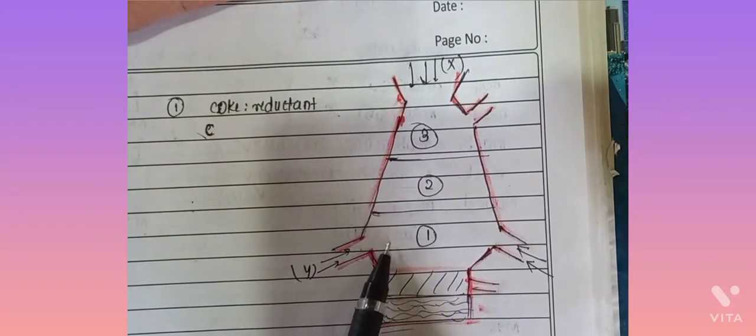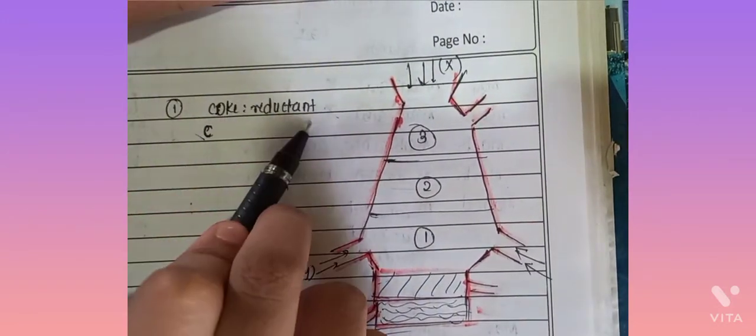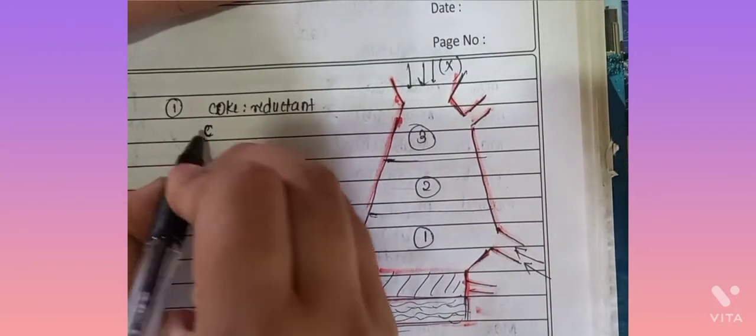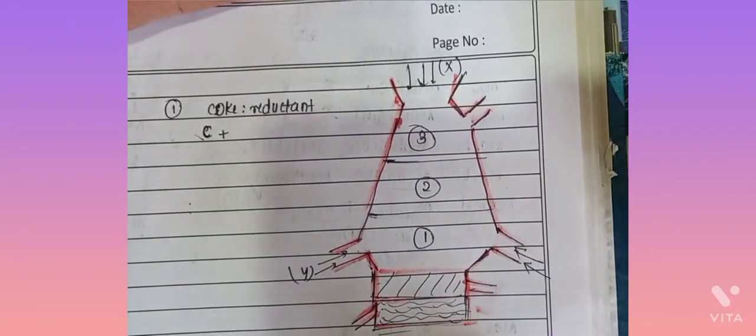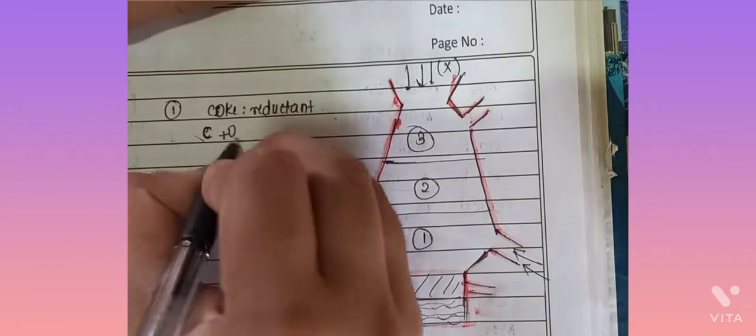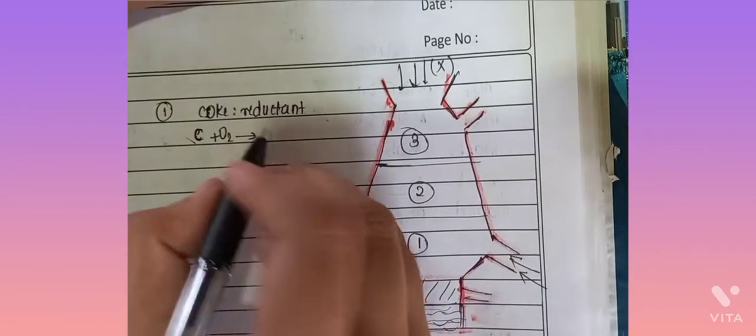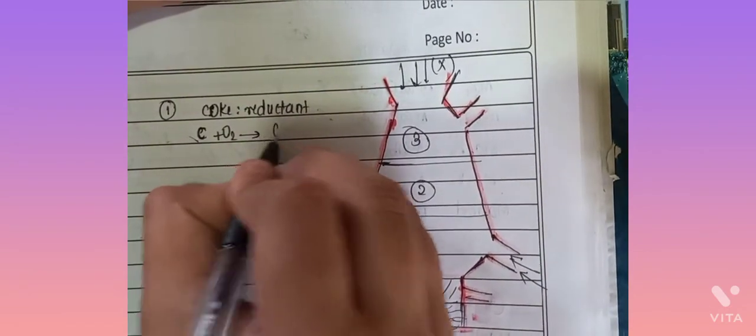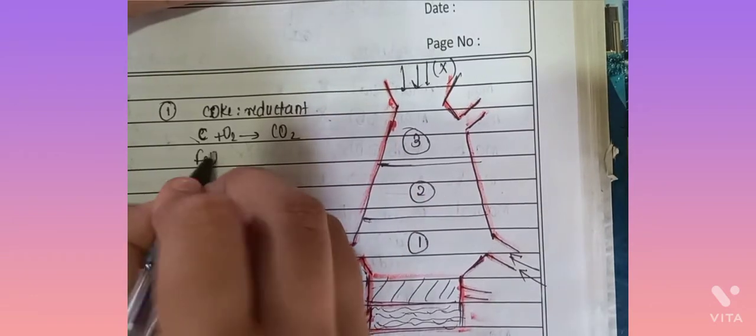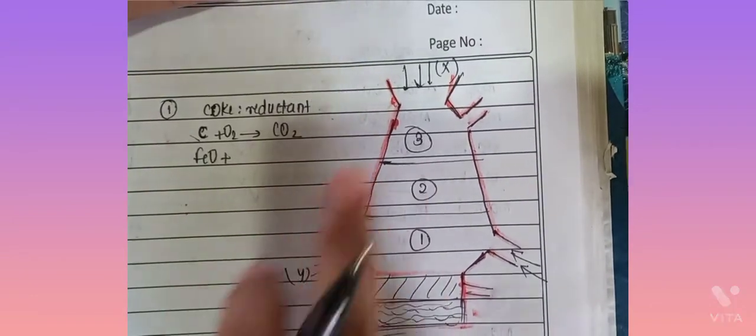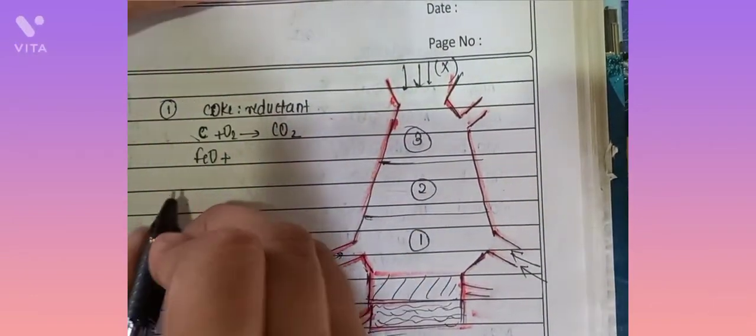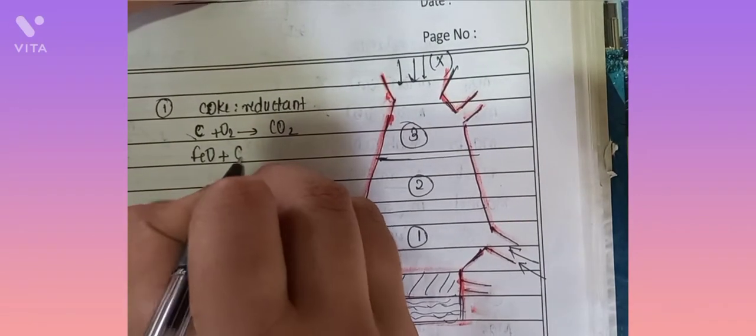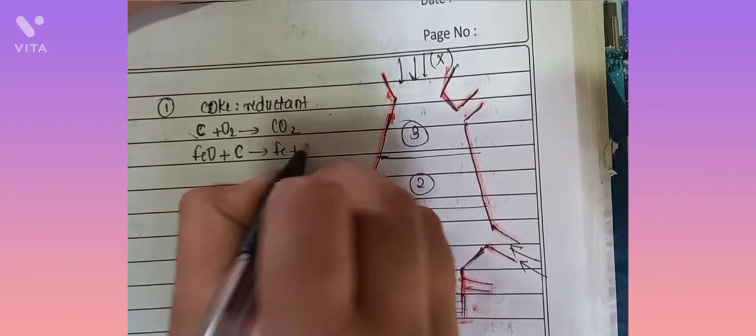In the first region temperature is maximum and coke is the reductant. Carbon and oxygen undergo complete combustion to form carbon dioxide. FeO reacts with carbon to form Fe plus CO.